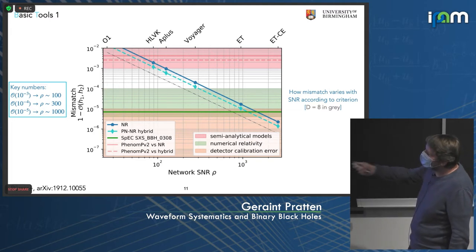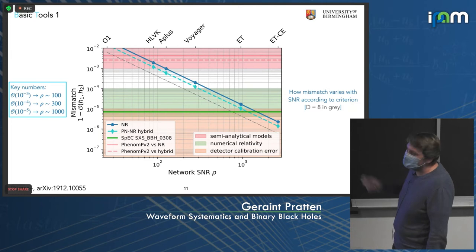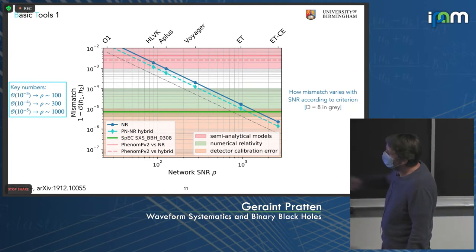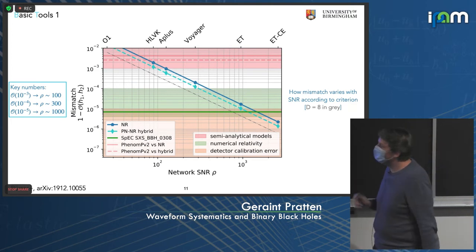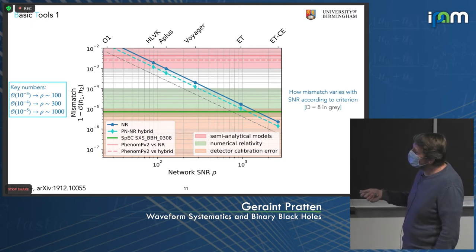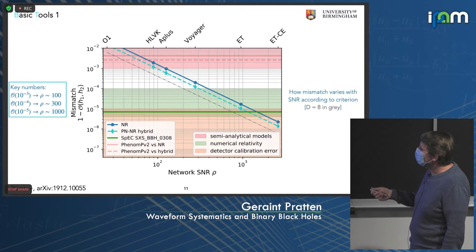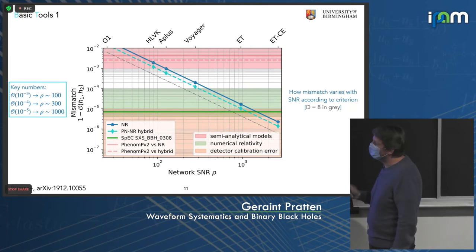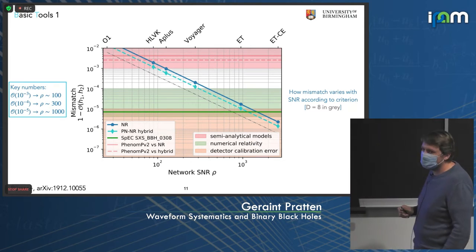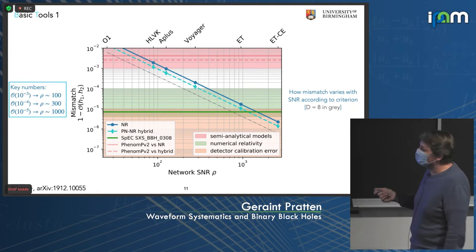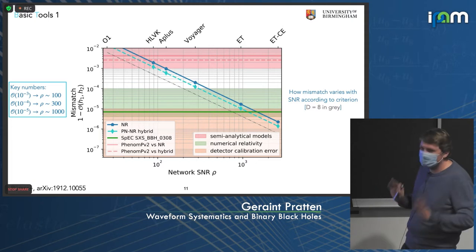When looking at mismatches, if you have a mismatch on the order of 10^-3, we expect waveforms to be relatively indistinguishable up to SNRs on the order of a few tens to around 100. If you have mismatches on the order of 10^-5, in principle we think we can go to SNRs of a few hundred, a thousand at max. But this really depends on where you are in the parameter space.